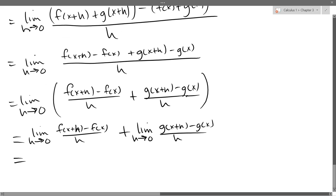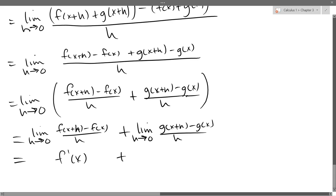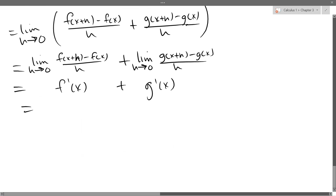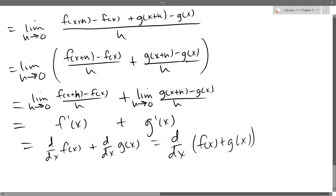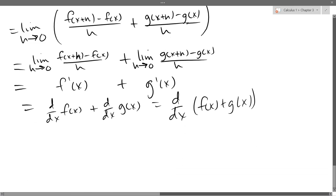What is this first limit here? Limit h approaches 0 of f(x+h) minus f(x) over h. That's f prime or derivative of f, however we want to write it. That's just f prime of x. What is the second limit? G prime. So we could write this as d/dx f of x plus d/dx g of x. And where do we start? We said that was, we started with d/dx of f(x) plus g of x. Hopefully that's what we started with. There we go. That is what we started with. So we're using all of our limit laws to go through and show the derivative rules.